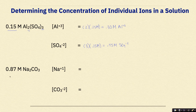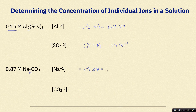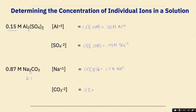Our last example: Na2CO3 with an overall concentration of 0.87 molar. To find the concentration of Na⁺, we look at the subscript of 2 next to Na — so 2 moles of sodium ions times 0.87 molar gives us 1.74 molar for Na⁺. For CO3²⁻, the ratio of sodium to carbonate is 2 to 1, so 1 times 0.87 molar gives us 0.87 molar for the carbonate ion concentration.